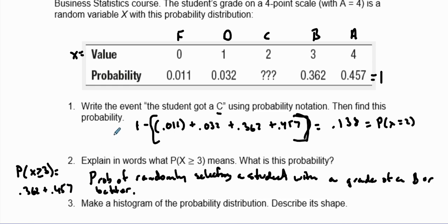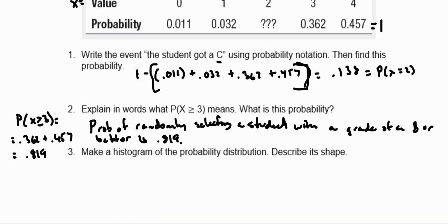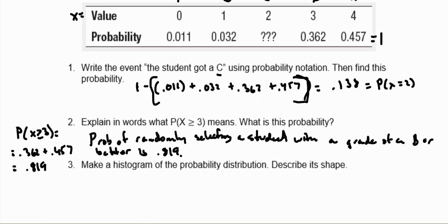If we add those two together, we're going to have 0.819. So the probability that a random student has a grade point of 0.819, and that's what we found right there. Now in the next part it says make a histogram and describe the shape.